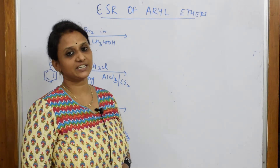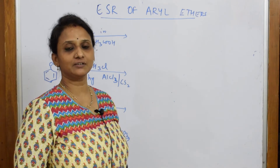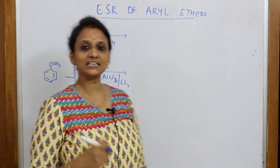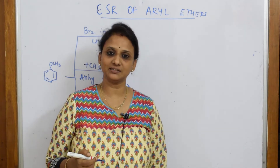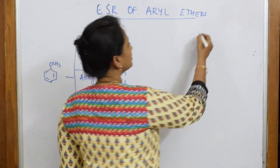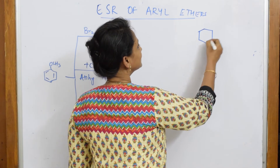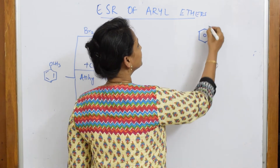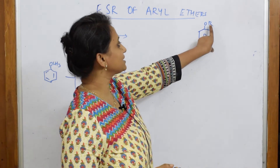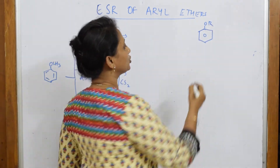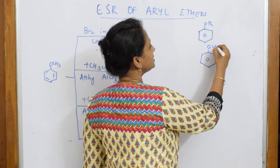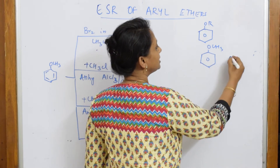Let us come back to the last topic of the chapter of alcohols, phenols and ethers. Till now we have been studying symmetrical ethers and unsymmetrical ethers. Now we will be doing aryl ethers. In aryl ethers, you have one benzene ring and one alkyl group. Suppose if you are taking this alkyl group as CH3, then OCH3 — this is called anisole.